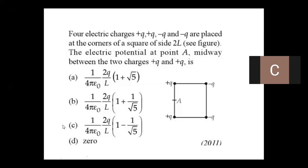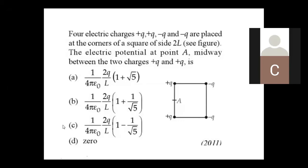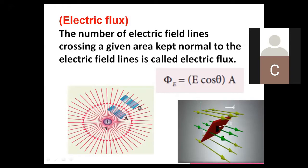This question I gave as homework to students — solved or not? What is the electric flux? Last class we talked about electric flux. The number of electric field lines crossing a given area, kept normal to the electric field lines — that is known as the electric flux.